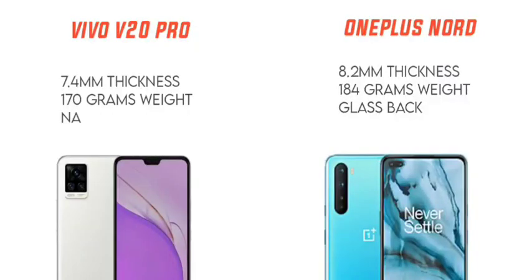The Vivo V20 Pro has 7.4mm mobile thickness and 170g mobile weight. The OnePlus Nord has 8.2mm mobile thickness and 184g mobile weight. It has a glass body and a small plastic frame. I will choose the Vivo V20 Pro for its glass body.